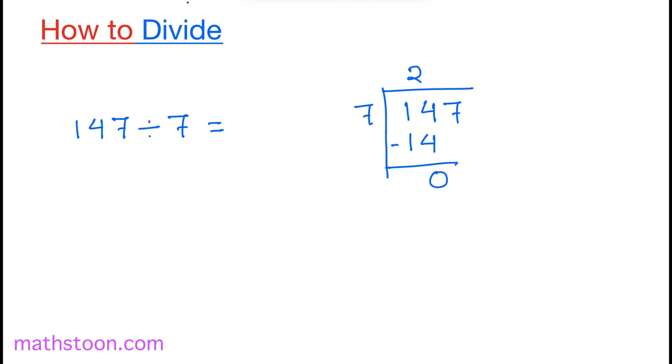Now see that this 0 is less than 7, that is why we will bring down this number 7 here.